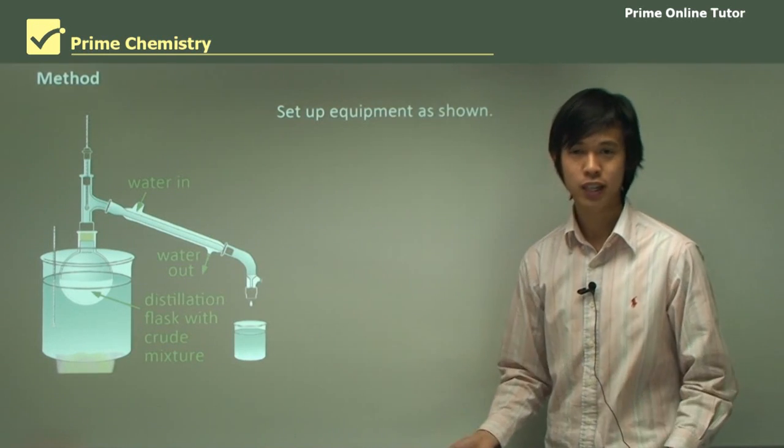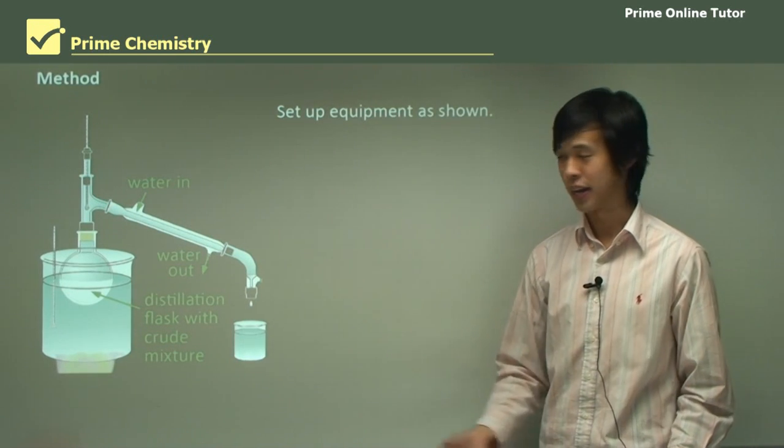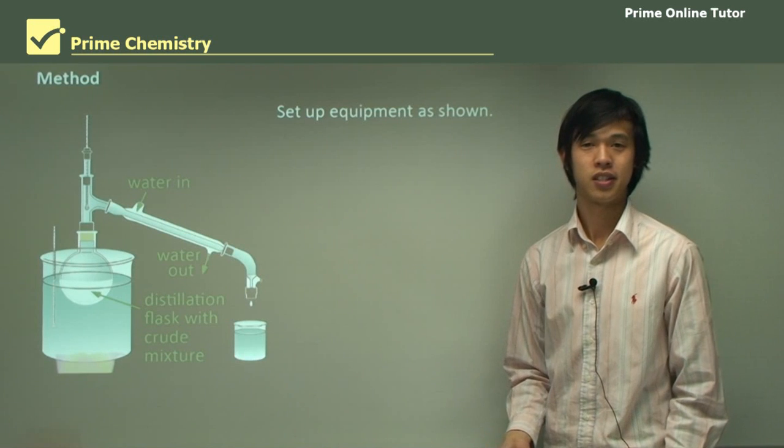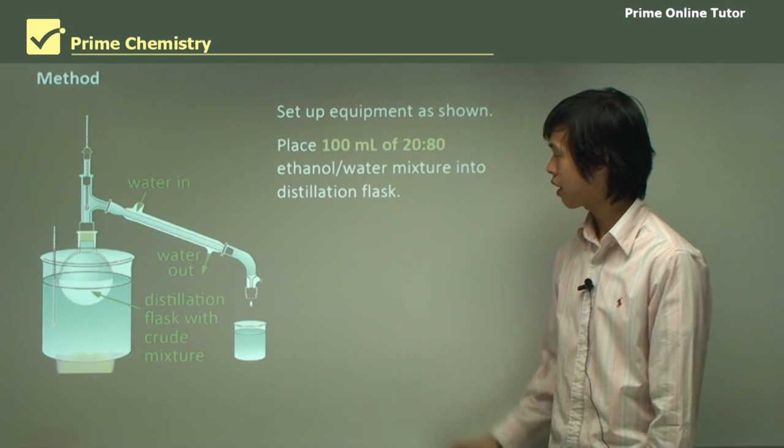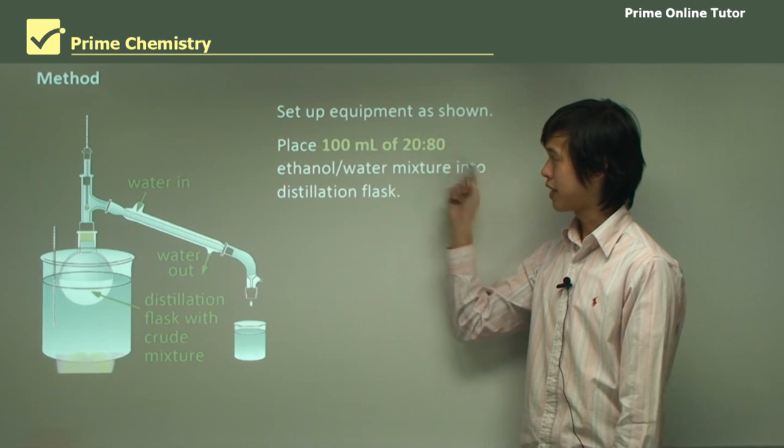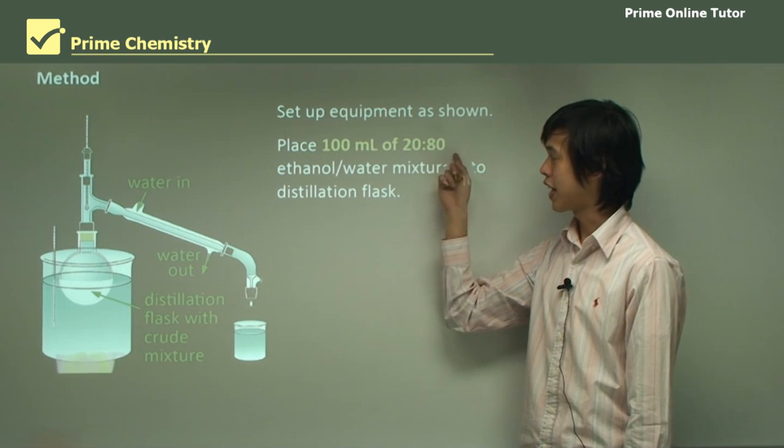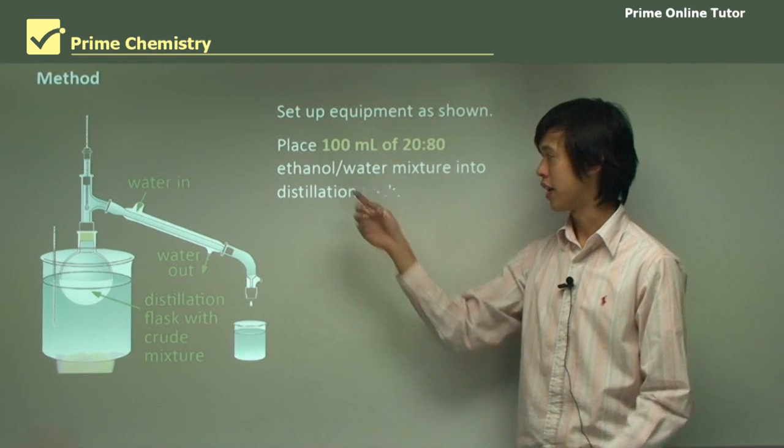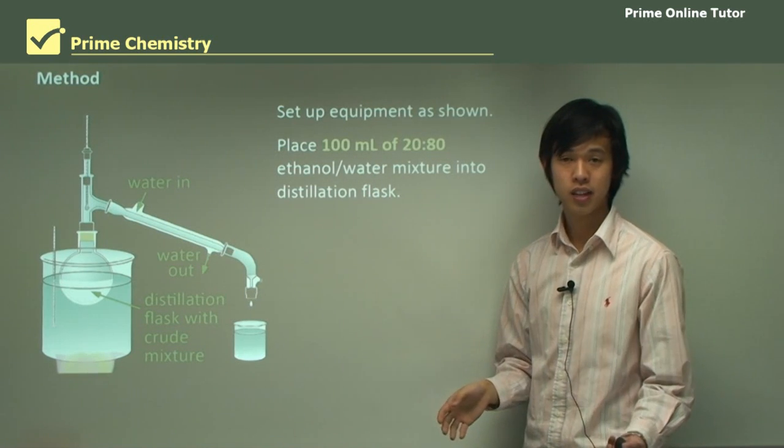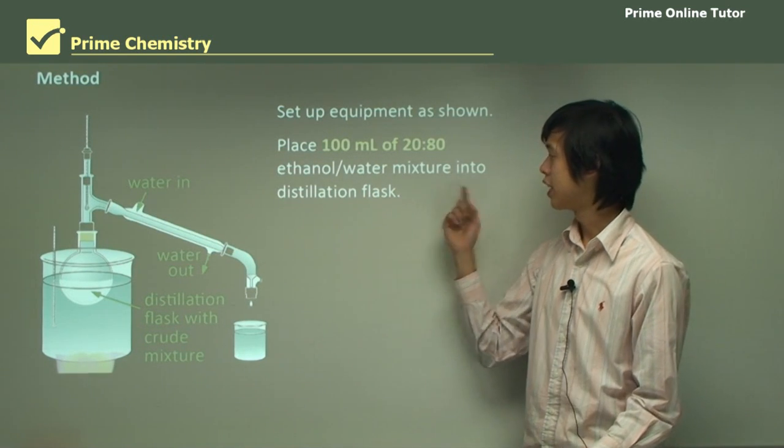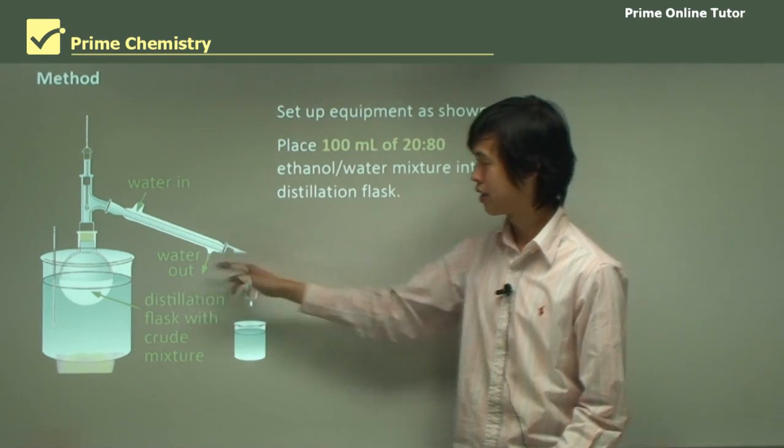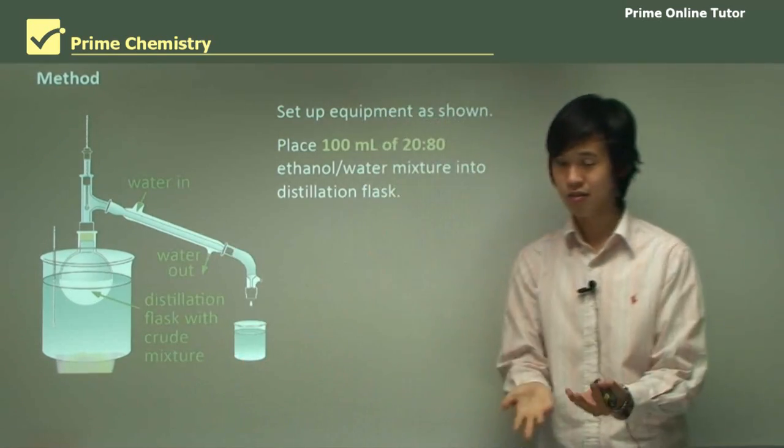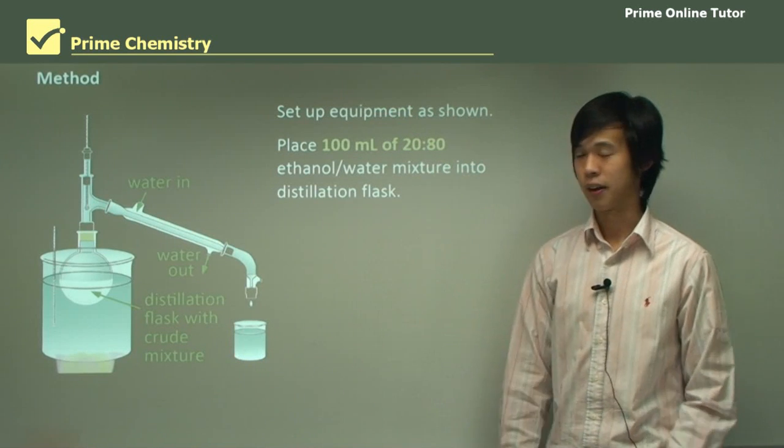And it's not a very fast prac, so you have to be a little bit patient. It will be quite slow at the start. So what we do is we place 100 ml of 20 to 80 ratio ethanol to water, so 20 ml ethanol, 80 ml water, into a distillation flask. So we pour this mixture into here, and we have 100 ml in total.